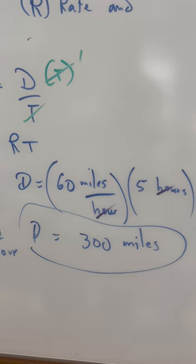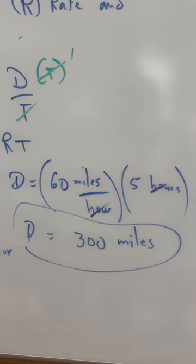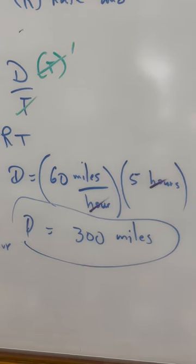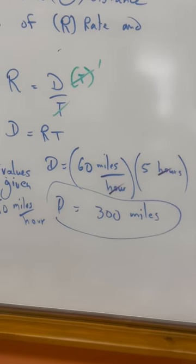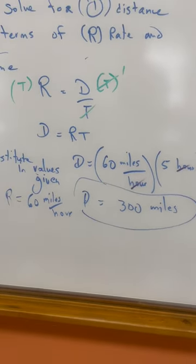We were given that she went 60 miles an hour for five hours. 60 times 5 is 300. Our distance is indeed 300 miles. And notice how the hours divides by hours and it disappears.